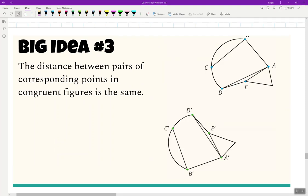All right, big idea number three, the distance between pairs of corresponding points in congruent figures is the same. All distances between pairs of corresponding points in congruent figures are the same. It doesn't matter what distance it is, as long as they correspond, they will be the same. Please pause this video and resume once finished.